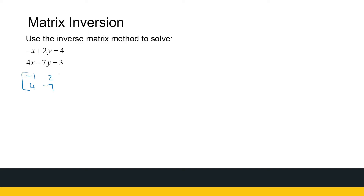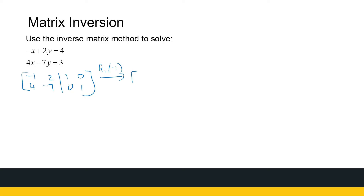To find the inverse of this matrix, we augment the coefficient matrix with the identity matrix and perform Gaussian elimination until the left-hand side becomes the identity matrix. Whatever is on the right will then be the inverse matrix. Our first step is to multiply row one by minus one to get a leading one.